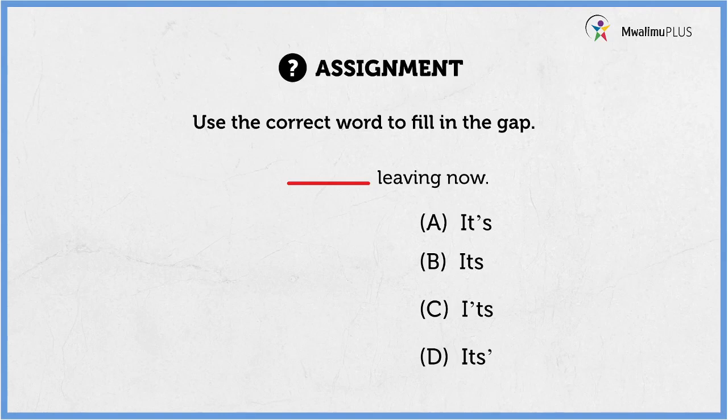So here we are supposed to give the short form of the two words it is using an apostrophe. Which position is the right position to place the apostrophe to show the short form of the words it and is? Between choices A, B, C and D, in which of those words is the apostrophe placed in its right position? The answer is A — it's living now, being the short form of it is living now.